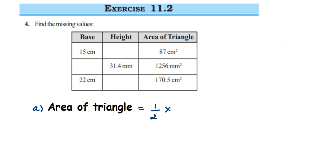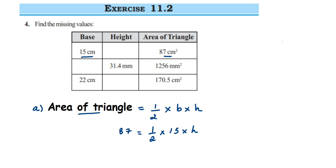The area of triangle formula is: Area = ½ × base × height. Substituting the known values for the first question — area is 87 and base is 15 cm — we write: 87 = ½ × 15 × h, where h is the unknown height.